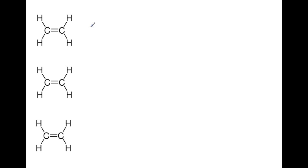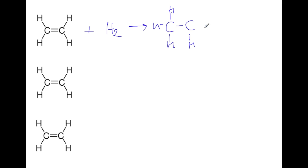Unsaturated compounds can undergo addition reactions with different small molecules. The first addition reaction we'll look at is that of hydrogen — if you take an alkene and add hydrogen, you'll get the corresponding alkane. We can also add a hydrogen halide, where X represents either fluorine, chlorine, bromine, or iodine.